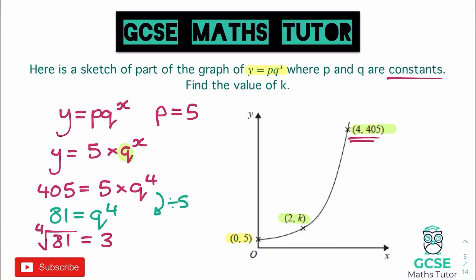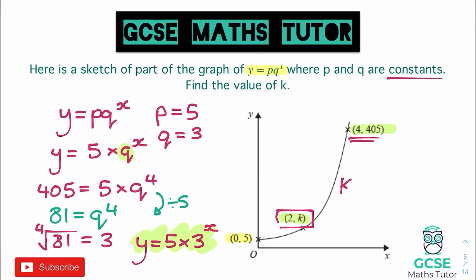So q equals 3 and p equals 5. We can now write the full equation: y equals 5 times 3 to the power of x. Now for the final coordinate (2, k): x = 2 and y = k. Substituting: k = 5 times 3 to the power of 2, which is 5 times 9, giving k = 45. That is our final answer.